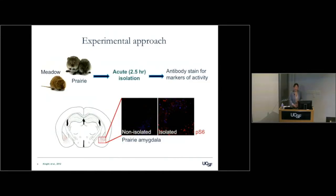We go back to this comparative approach with prairie voles and meadow voles — a monogamous and a promiscuous species. Here I'll be showing data from animals that have been co-housed; we remove one from the group it's been living with its whole life — we've also done this with pair-bonded animals — and we acutely isolate them.